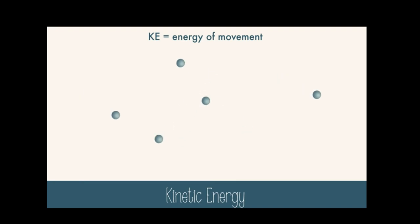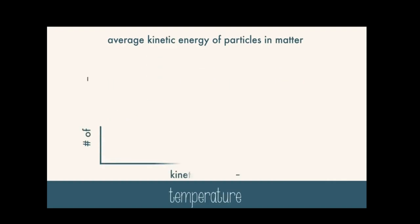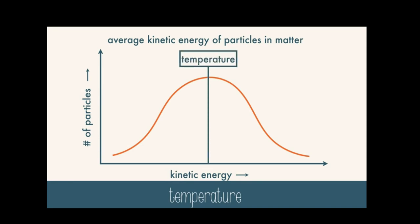But not every particle is moving at the same speed. Some are moving a little slower, and some a little faster. But the average kinetic energy of a group of particles is temperature. This bell curve shows the kinetic energy for particles in a sample of matter. And the average energy of the particles is temperature, which we measure in Celsius.